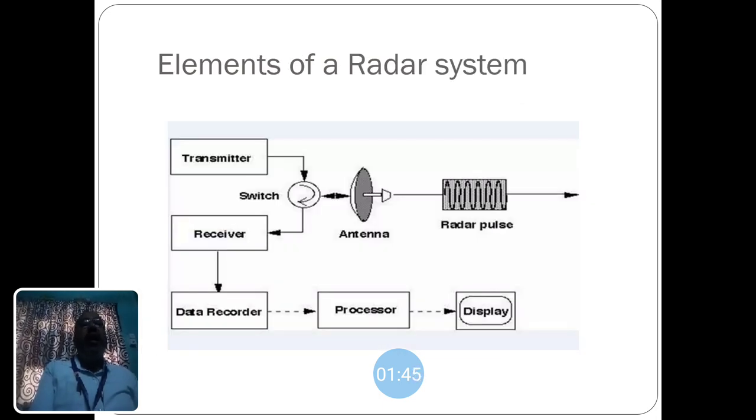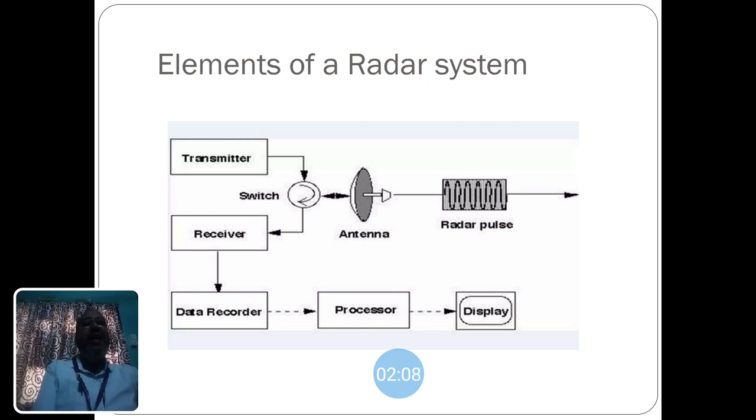Then, the elements of a radar system. The radar pulses are transmitted through the antenna and when the signal is reflected back from the target, it is received.